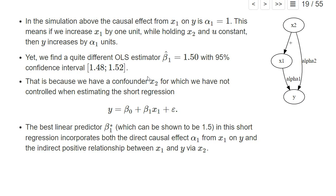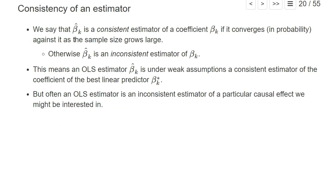That will be part of the best linear predictor in this linear regression, and so it will also be part of our OLS estimator. Our OLS estimator does not converge against the true causal effect α₁. For a cleaner formalization, let's introduce a new econometric concept that we call consistency.